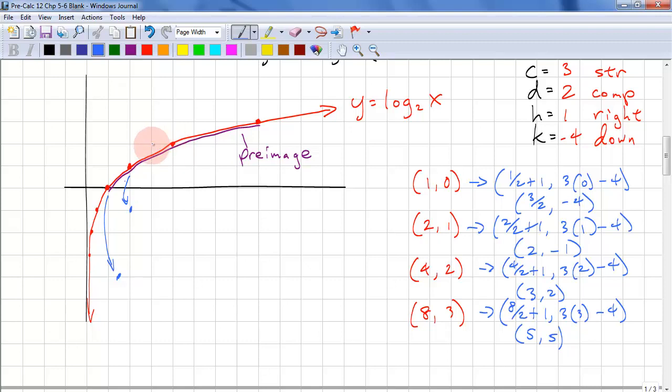(4, 2) goes to (3, 2). So that goes there. And (8, 3) goes to (5, 5), and that's up here. So our curve looks like this.